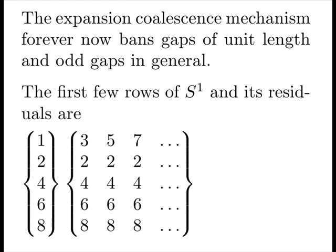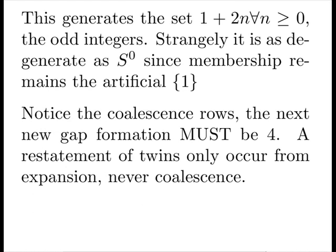The first few rows of S1 and its residuals are as follows. This generates the set of the odd integers, and strangely, it's as degenerate as S1, since membership remains this artificial trivial one. Notice that the coalescence rows, the next new gap formation must be a 4. A restatement of twins only occur from expansion, never coalescence. We can't make twins again.